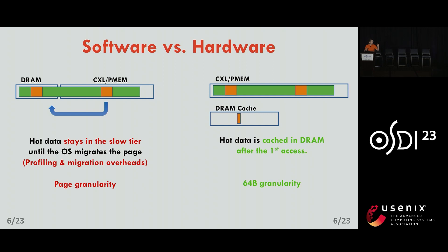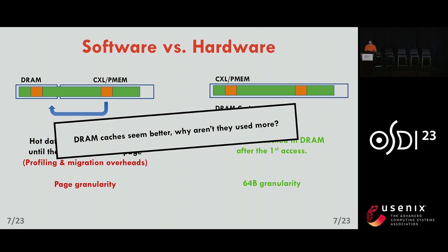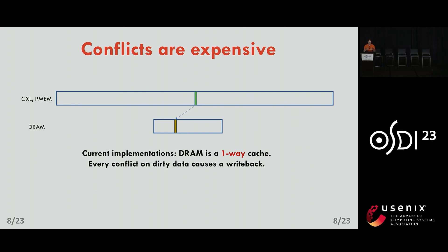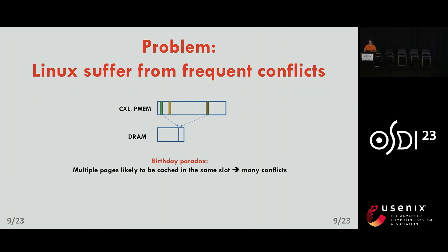As shown on these slides, having the tiers handled by hardware seems better. But if it looks better, why is no one using it? The reason is that caches suffer from conflicts. Current implementations of DRAM caches are done as a one-way directly mapped cache, which means that every time a cache miss happens, data has to be brought back, and this can cause evictions and writebacks to the slow tier — which are very expensive and inefficient. Linux, as it is right now, is completely oblivious to the fact that it might operate on a machine with a very large DRAM cache.